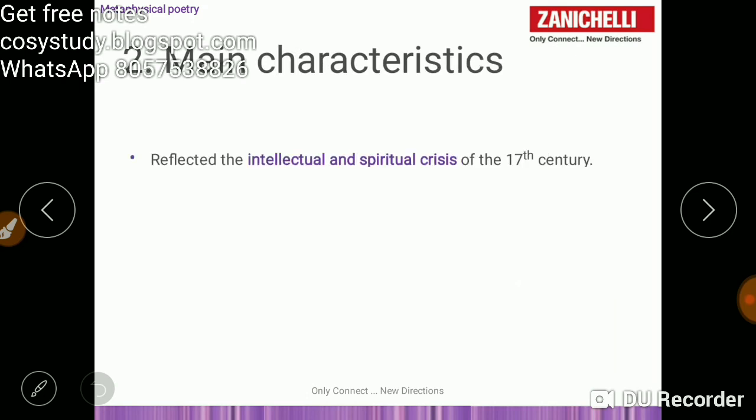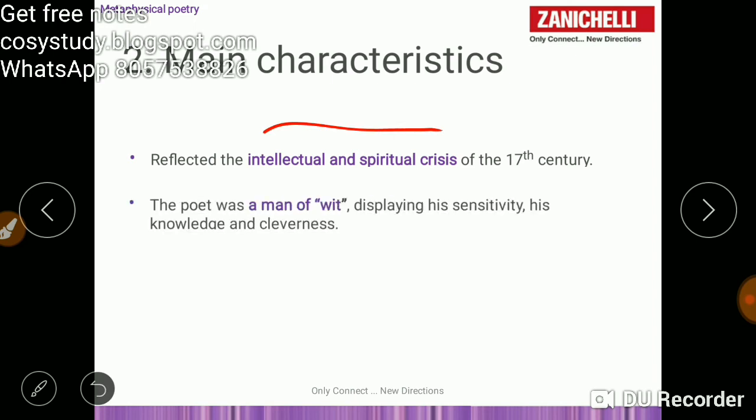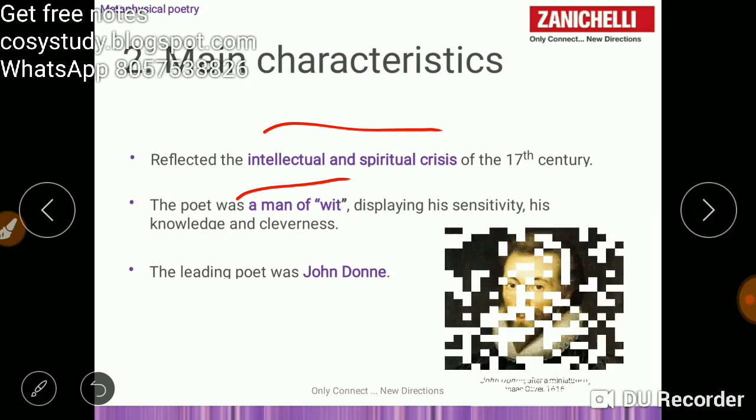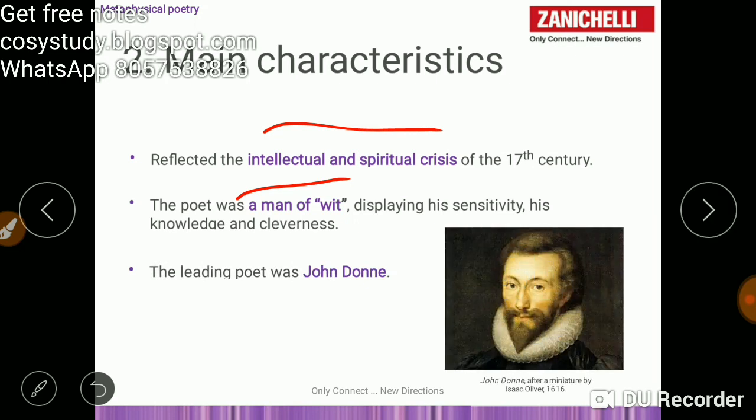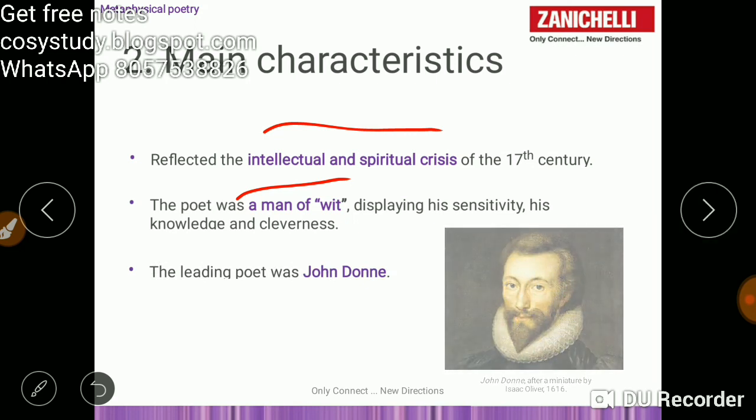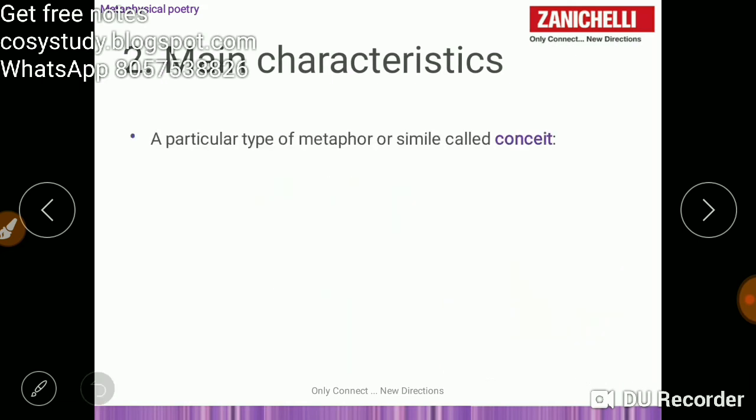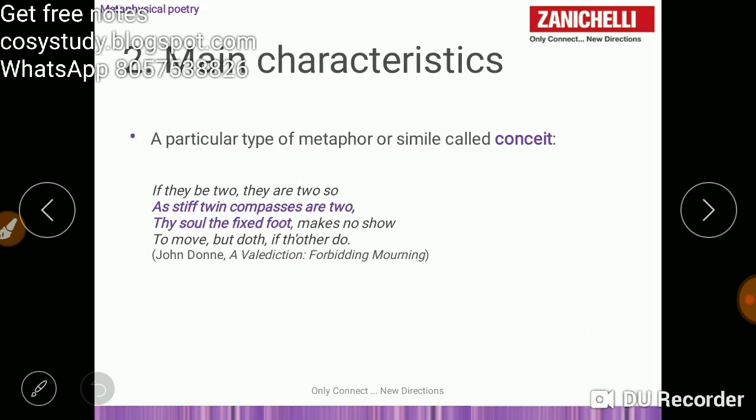Main characteristics: First we talked about intellectual and spiritual crisis of 17th century. Poet was man of wit. John Donne, John Donne is keyword. Intellectual and spiritual crisis is keyword. Next keyword is conceit.